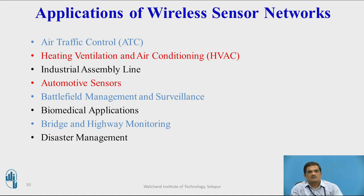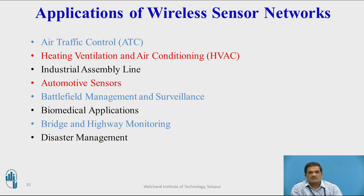Wireless sensor networks may be used in air traffic control, heating, ventilation and air conditioning (HVAC), industrial assembly lines, automotive sensors, battlefield management and surveillance, biomedical applications, bridge and highway monitoring, and disaster management. In all these applications, the network is deployed wirelessly, nodes collect and gather information wirelessly, and collectively send it to the central system so that the system can take action or preventive measures to avoid any disaster.